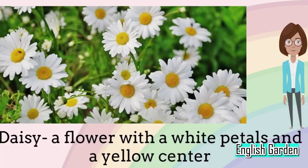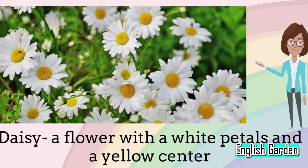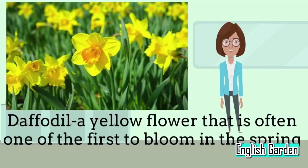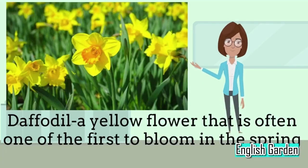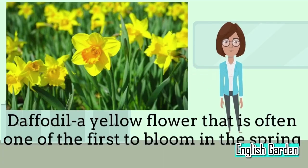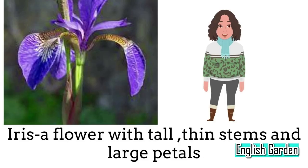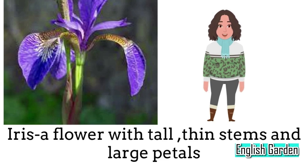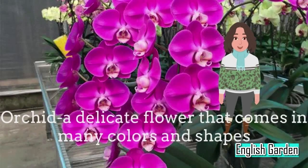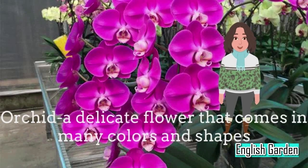Daisy: a flower with white petals and a yellow center. Daffodil: a yellow flower that is often one of the first to bloom in the spring. Iris: a flower with tall, thin stems and large petals. Orchid: a delicate flower that comes in many colors and shapes.